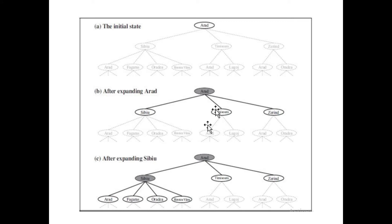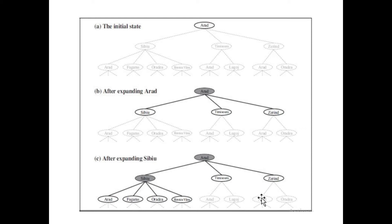If we move towards Timisoara, we can then move further from Timisoara. Similarly, if we are going in the Zerind direction, we can move towards Timisoara from there as well. So this is how we represent this problem using tree representations, showing the three possible expansions from the root.